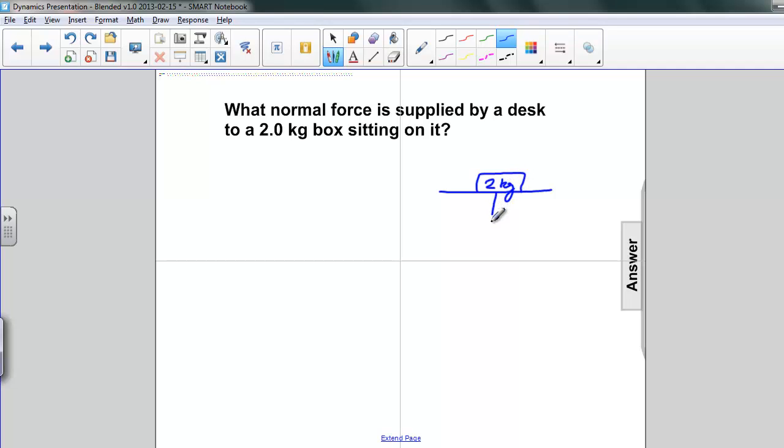The force of gravity on the box, or its weight, is downward, and because the box isn't moving, there has to be a normal force exactly opposite to it, pointing upward.